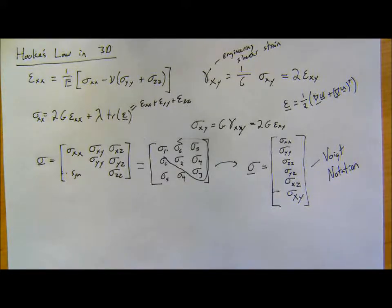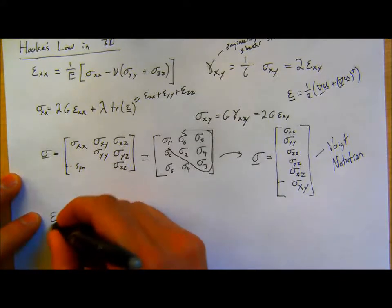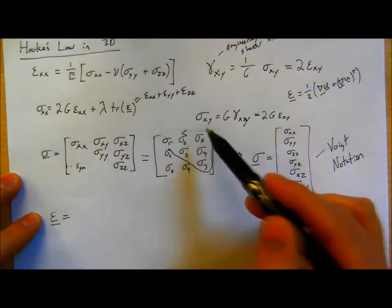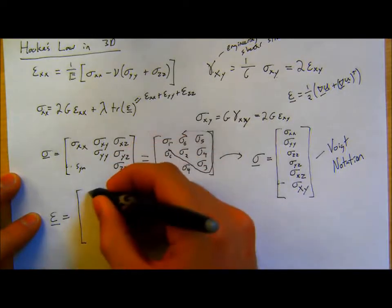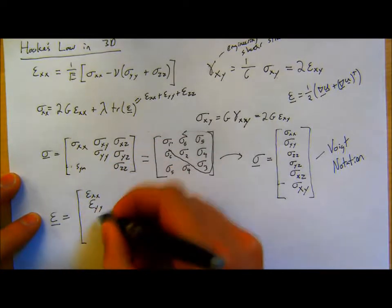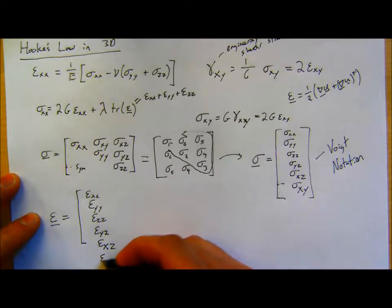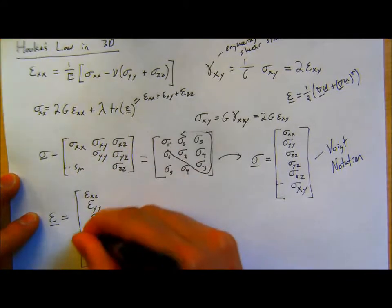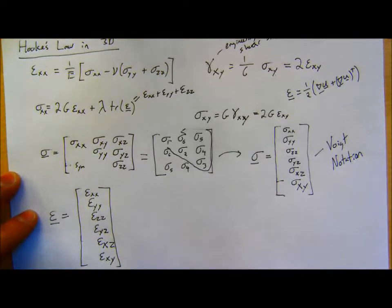I can do something similar now for my strain tensor. My epsilon, using the same process of 1, 2, 3, 4, 5, 6 going around my matrix in this loop, I can now say this is epsilon_xx, epsilon_yy, epsilon_zz, epsilon_yz, epsilon_xz, epsilon_xy. Sometimes I'm going to write it like this.